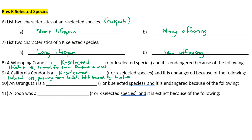Number ten: an orangutan is a K-selected species and is endangered because of slash-and-burn deforestation for palm oil plantations. They do not reach sexual maturity for 8 to 15 years, and females only reproduce every 8 years — that's why they are endangered.